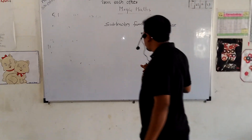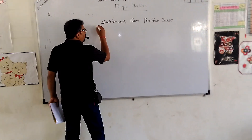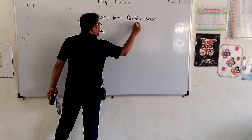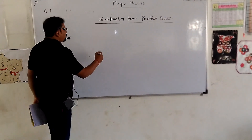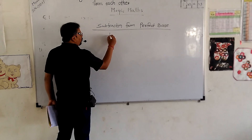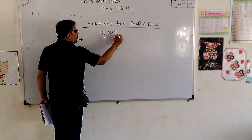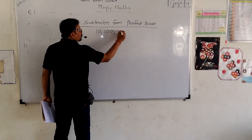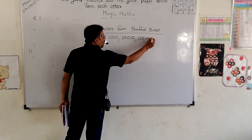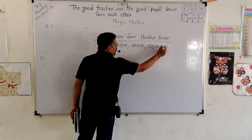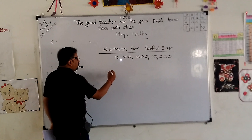Now we are going to learn subtraction from perfect base. So we know what the perfect bases are: ten, hundred, thousand, and ten thousand — they are all called perfect base.